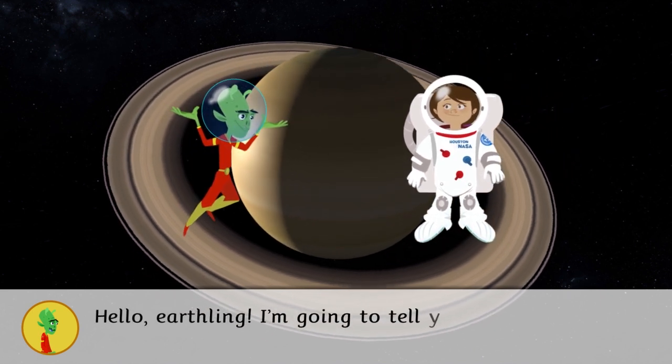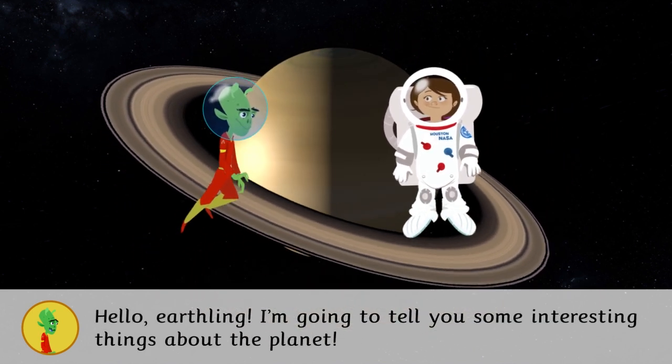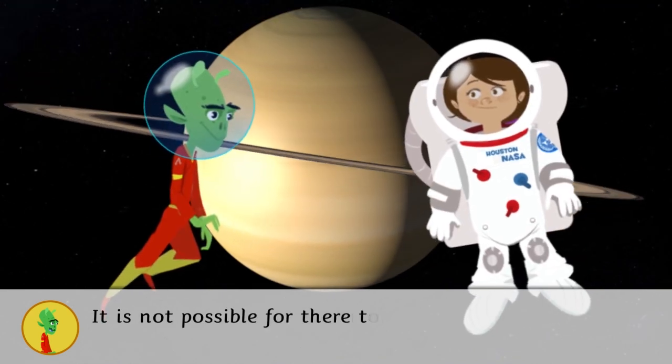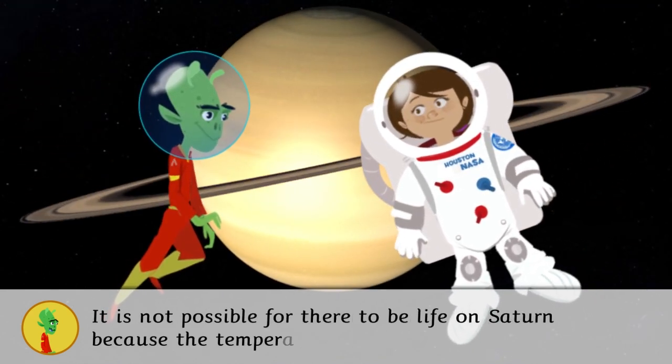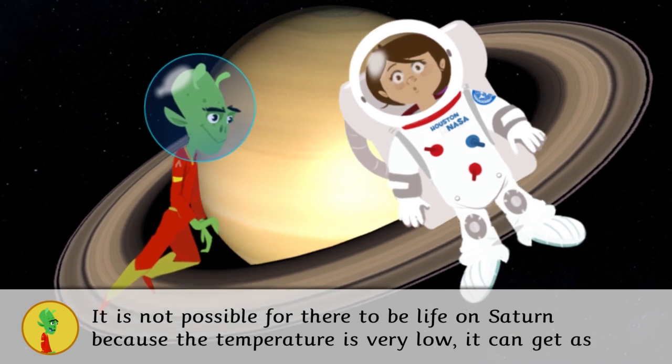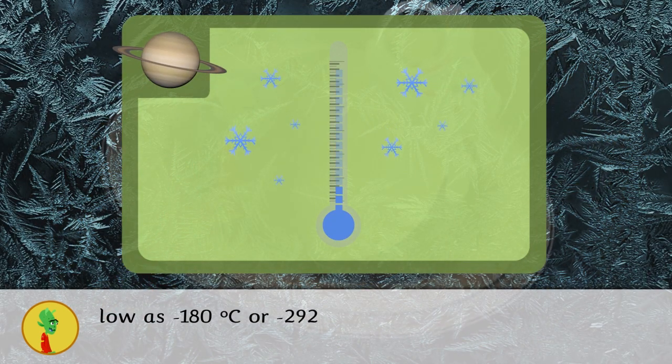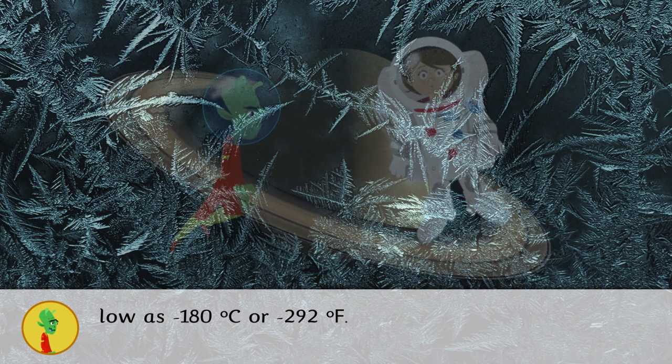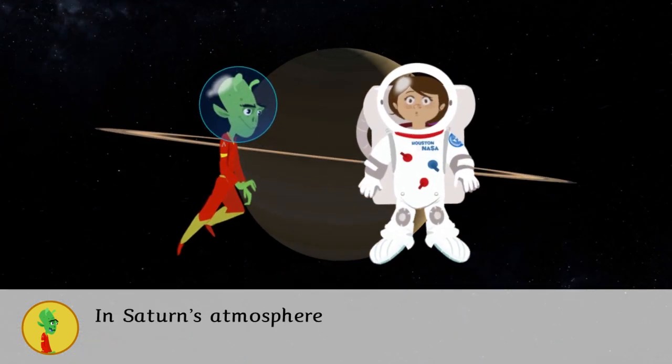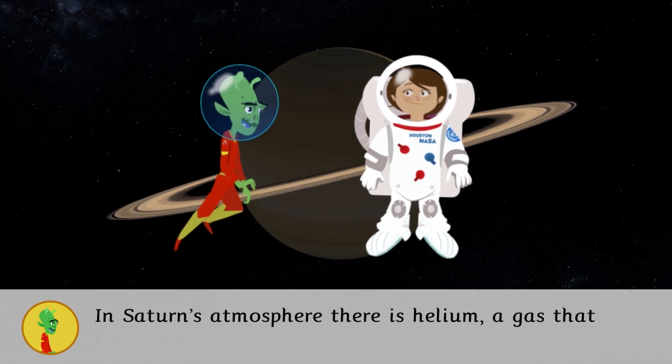Hello earthling, I'm going to tell you some interesting things about the planet. It is not possible for there to be life on Saturn because the temperature is very low. It can get as low as minus 180 degrees Celsius or minus 292 Fahrenheit.